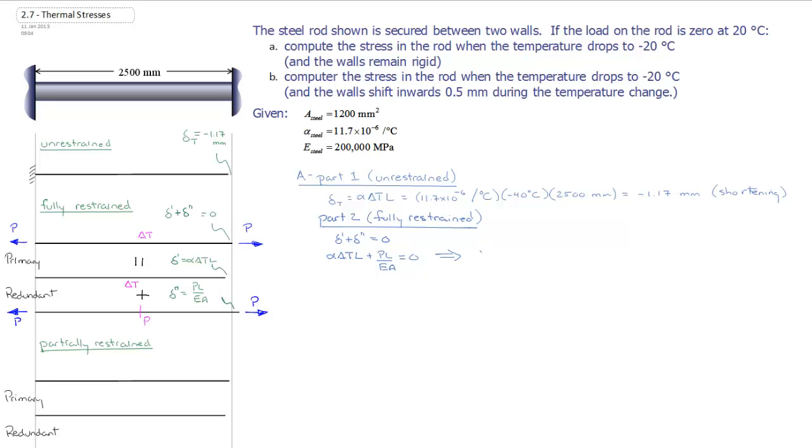And that can be rearranged such that we get P is equal to the negative EA over L multiplied by our thermal displacement.